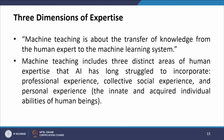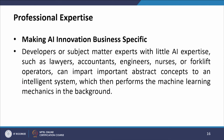Machine teaching is about the transfer of knowledge from the human expert to the machine learning system. It includes three distinct areas of human expertise that AI has long struggled to incorporate: professional experience, collective social experience, and personal experience — the innate and acquired individual abilities of human beings. Making AI innovation business-specific, subject matter experts with little AI expertise such as lawyers, accountants, engineers, nurses, or forklift operators can impart important abstract concepts to an intelligent system, which then performs the machine learning mechanics in the background.